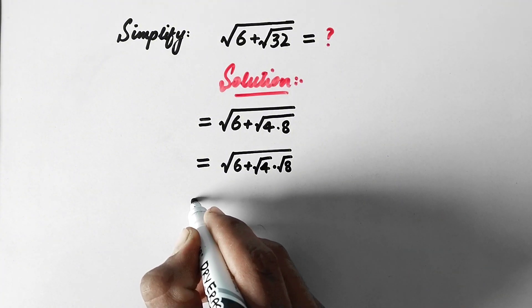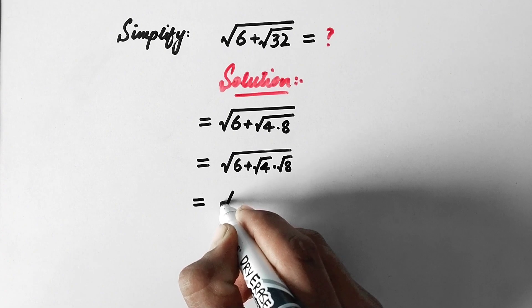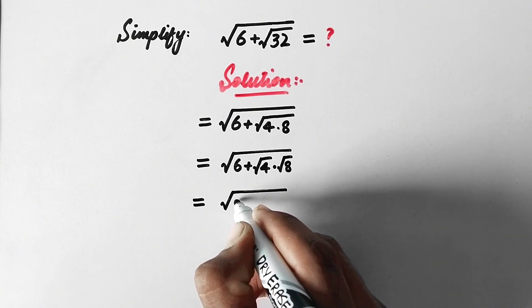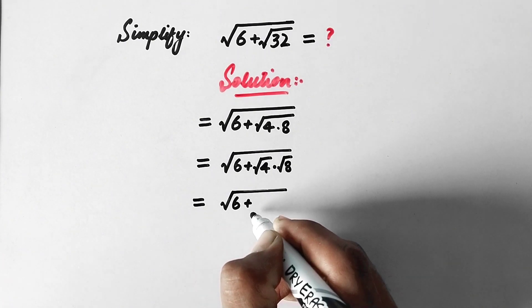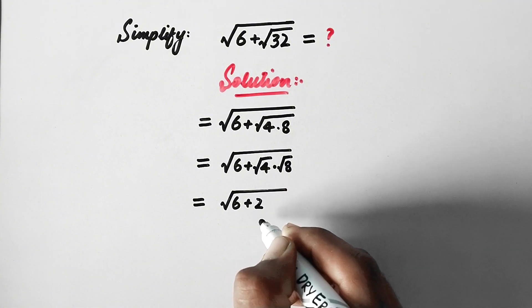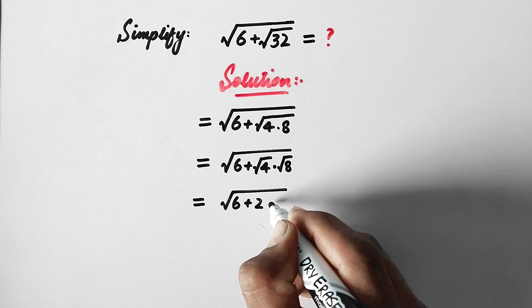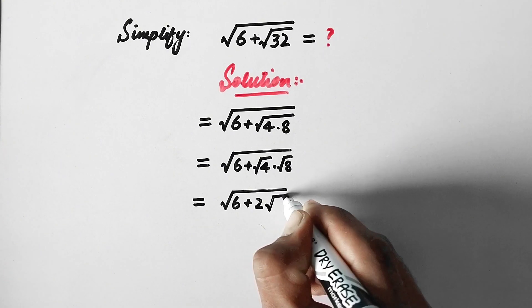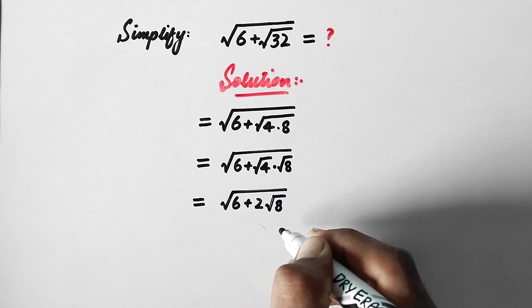So now here we will write √6 + √4 is equal to 2, and here is √8.